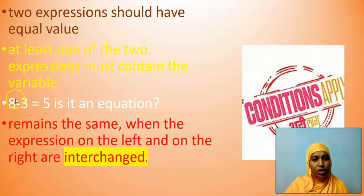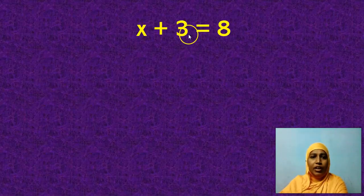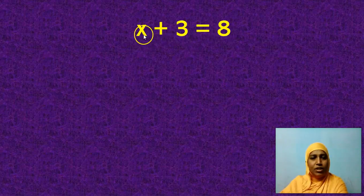I am changing their positions. This is acceptable. Without changing any signs, you can just interchange their positions. Is it clear, my dear children? Now here I have an equation. What is that equation? X plus 3 is equal to 8.